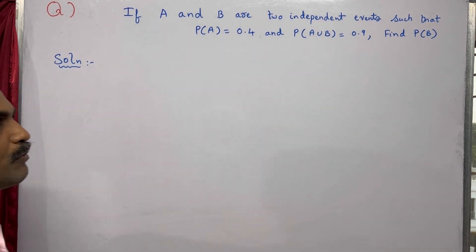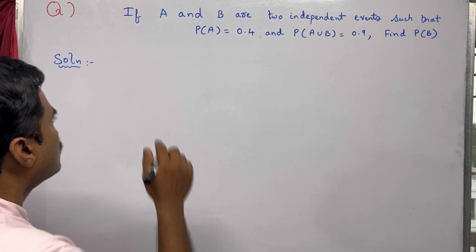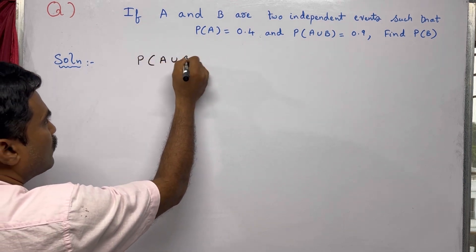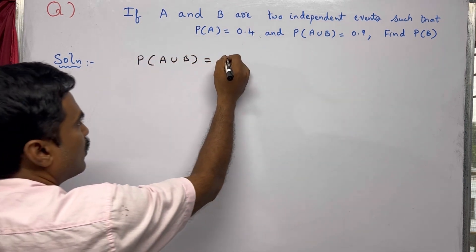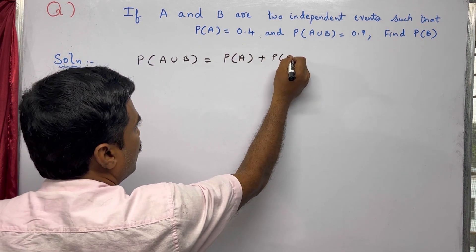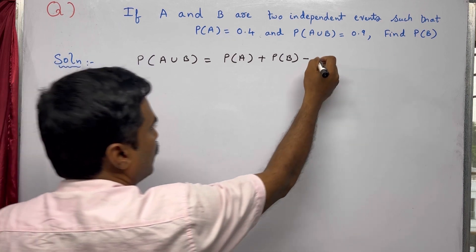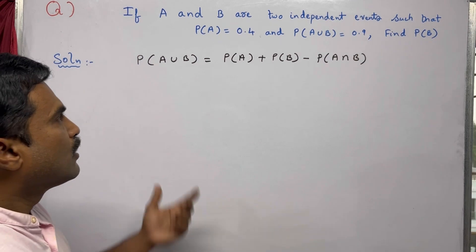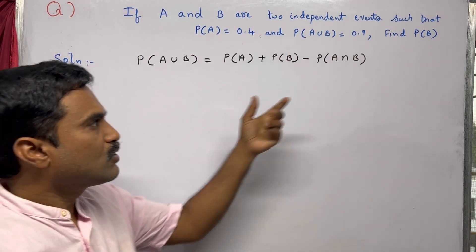We know that probability of A union B equals P(A) plus P(B) minus P(A intersection B). So here now, P(A∪B) value is given.